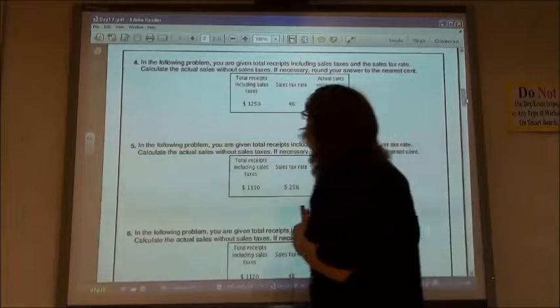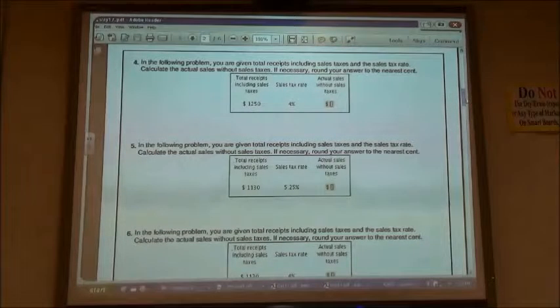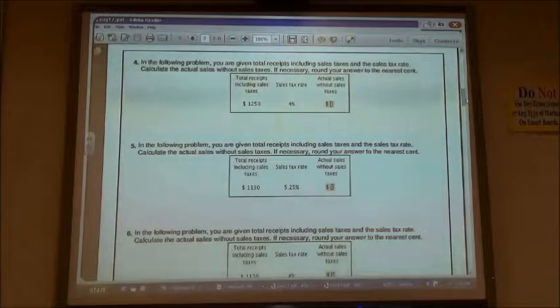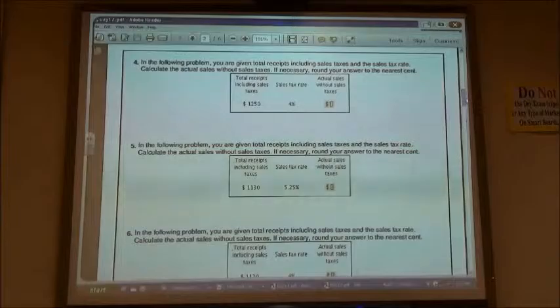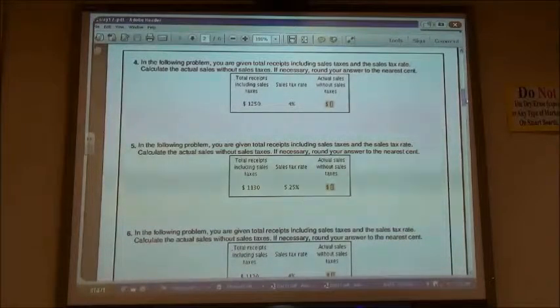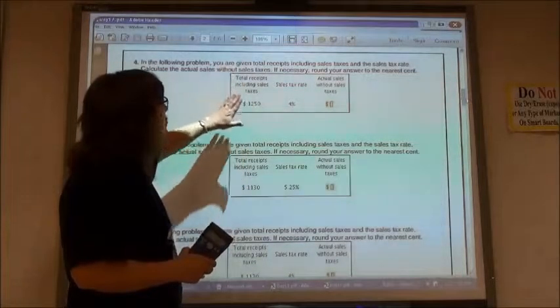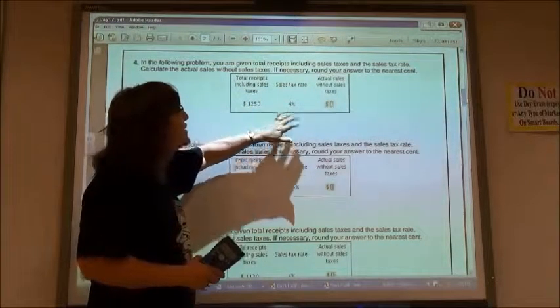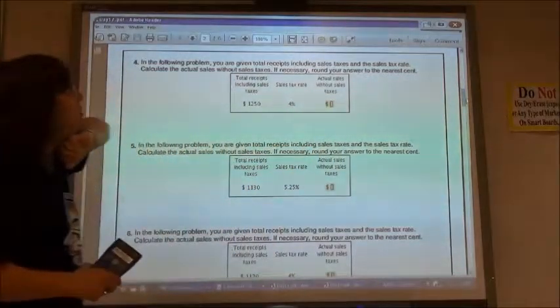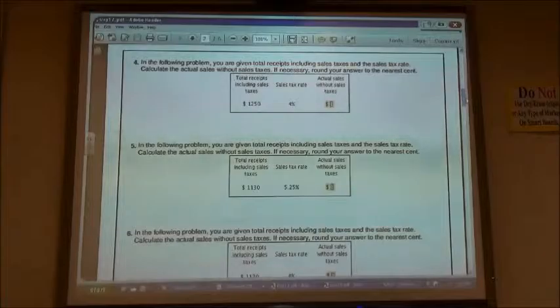Number 4, it says in the following problem you are given a total receipt including sales taxes and sales tax rate. Calculate the actual sales without sales tax. If necessary, round your answer to the nearest cent. So this is the total receipt that I have, including the sales plus the tax. I want to know what the sales are, actual sales without the sales tax included.